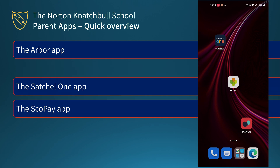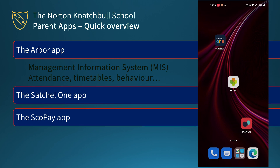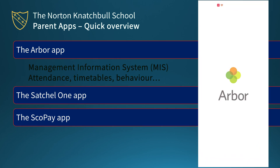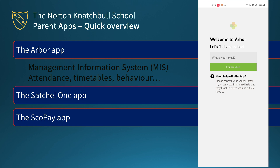We're going to start off looking at Arba, which is our management information system. This contains information about your child's timetable. It also allows you to see and edit your personal information, like your mobile phone numbers, email addresses, and so on, and also achievement points, negative incidents, and attentions.